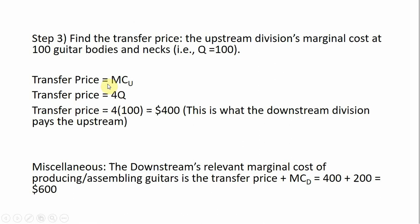Step three is to find the transfer price — what the downstream division pays the upstream division for a set of guitar bodies and necks. The upstream division's marginal cost at 100 units represents the transfer price, giving us a transfer price of $400. From the downstream division's point of view, its relevant marginal cost of producing and assembling guitars is the transfer price plus the marginal cost of assembly, or $600.